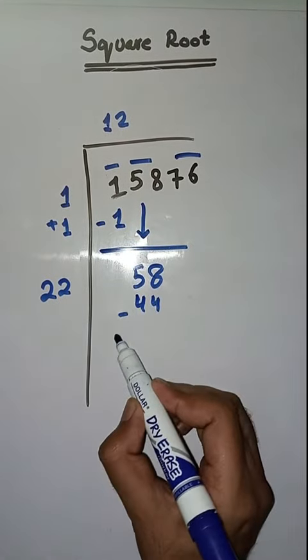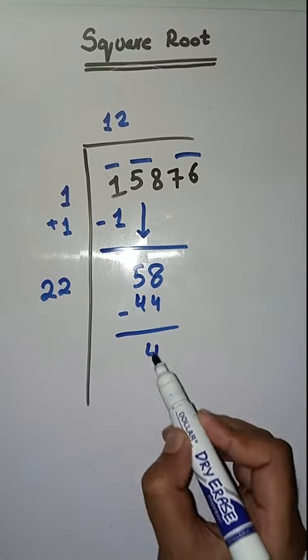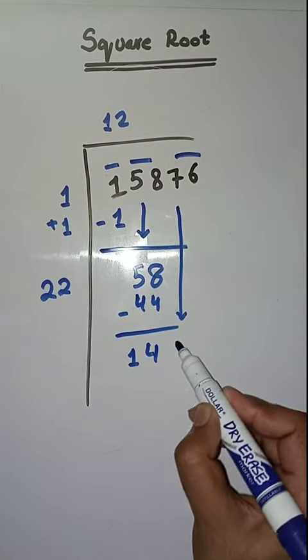Next pair is 76, isko bhi hum niche likhenge. Now we will do 22 plus 2 which is equal to 24.